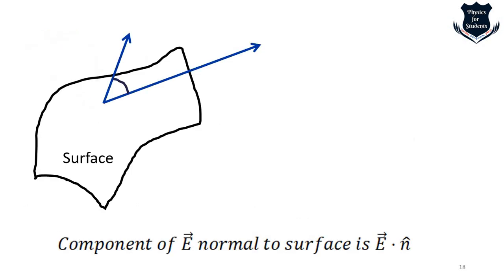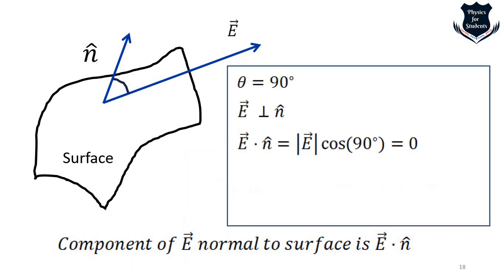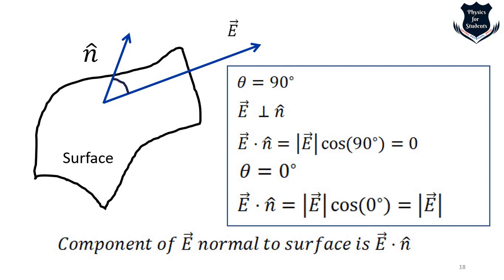Consider two cases: when theta is 90 degrees and E is perpendicular to n, then E·n = 0, meaning the component of E perpendicular to the surface is zero. When theta is zero degrees and E is parallel to n, then E·n equals the full length of E, meaning the entire field is perpendicular to the surface.